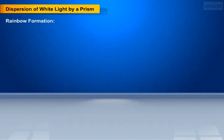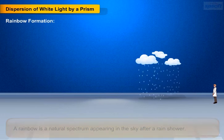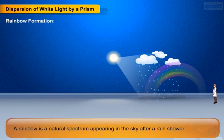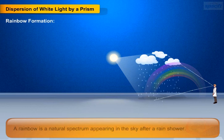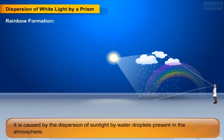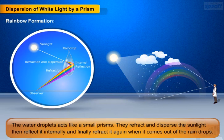Now let's study about rainbow formation. How does the rainbow form? A rainbow is a natural spectrum appearing in the sky after a rain shower. It is caused by the dispersion of sunlight by water droplets present in the atmosphere. The water droplets act like small prisms.